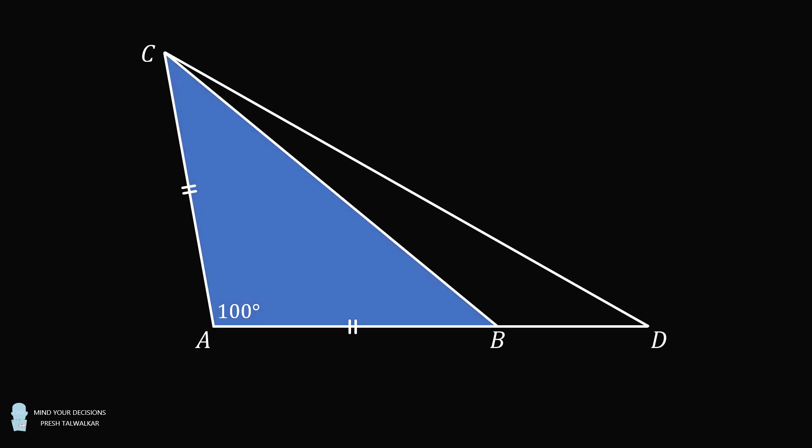Focus on triangle ABC. Since this is an isosceles triangle with a vertex angle equal to 100 degrees, the other two angles will be equal to 40 degrees each.